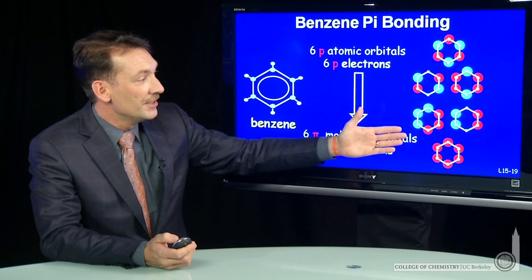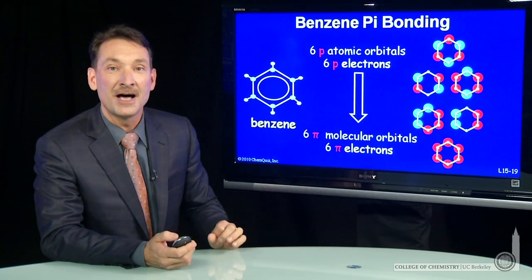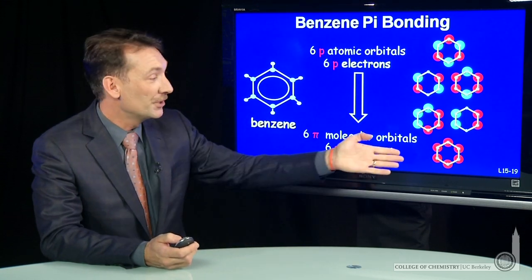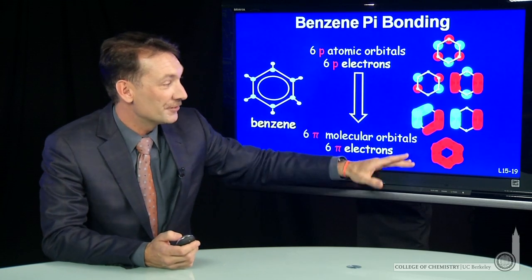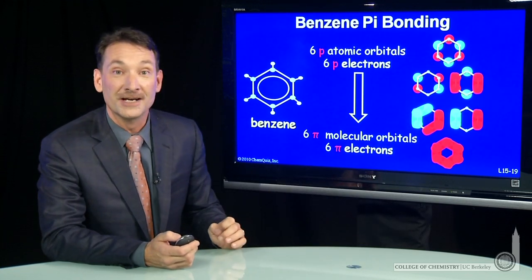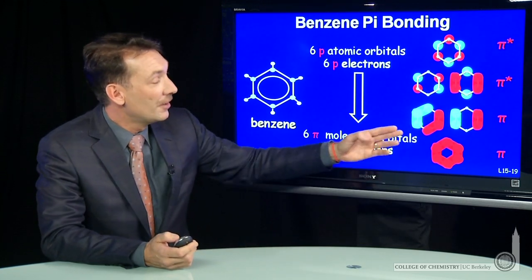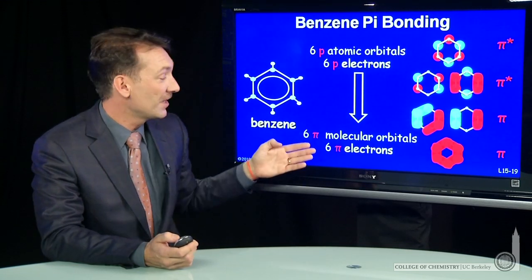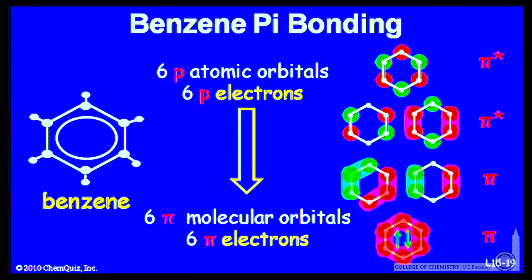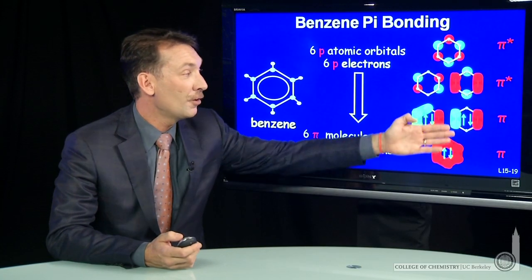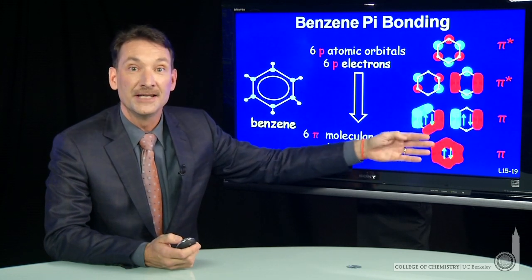When looking at these, we usually designate the lower half as pi bonding orbitals and the upper half as pi antibonding orbitals. When you put in the six electrons — shaded here to emphasize the ring nature of that extended orbital all the way around the ring of benzene — you can put electrons into pi and pi star orbitals. In this case, we have six electrons, so they go into the lowest three pi bonding orbitals, and all of them are bonding.